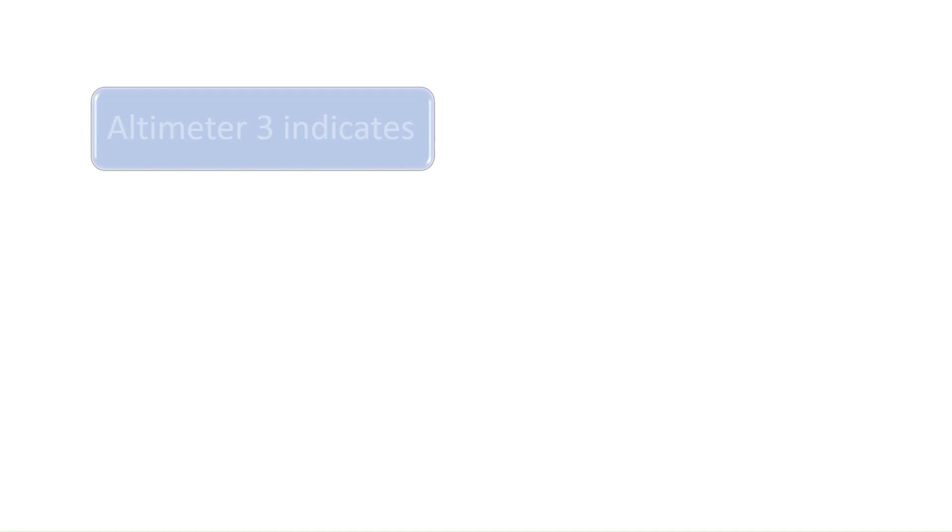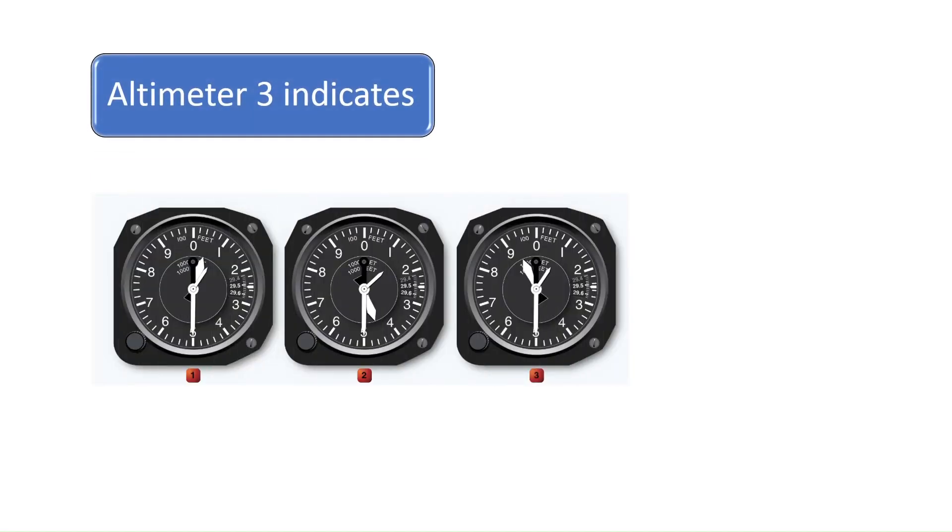Question 3. What altitude is altimeter 3 indicating? The short, skinny hand, represented by the blue arrow, represents tens of thousands of feet, the short, wider hand, shown by the yellow arrow, represents thousands of feet, and the longest hand, see the green arrow, represents hundreds of feet.